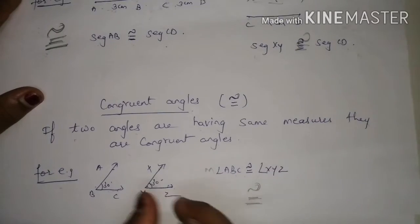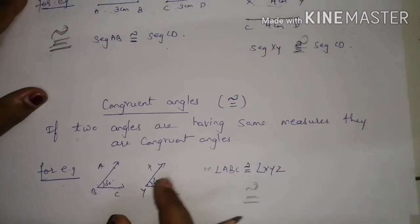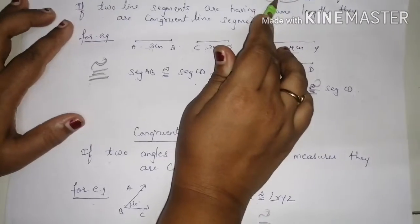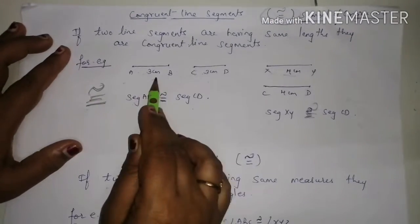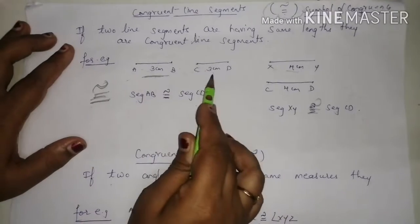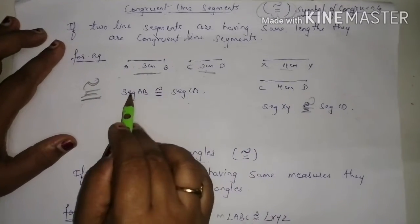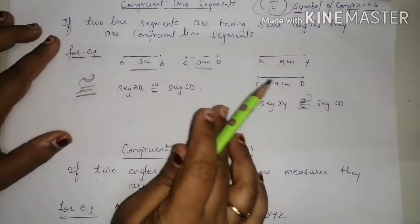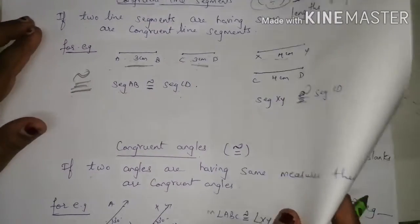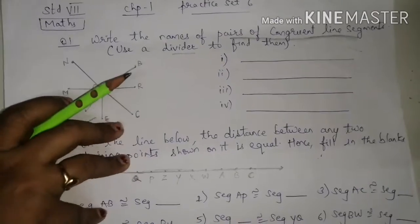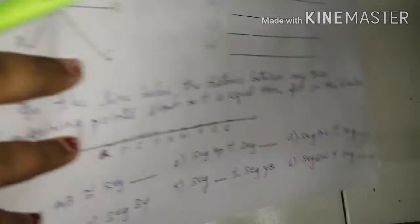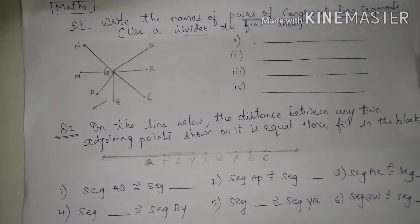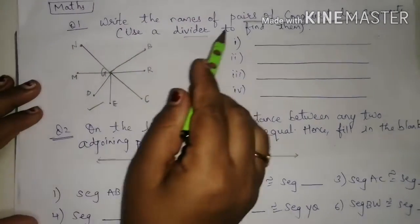Remember this congruence symbol — we use it when two line segments or two angles have the same measure. When two segments are congruent, meaning they have the same measurement, for example 3 cm and 3 cm, we write: segment AB is congruent to segment CD. Now let's start Practice Set 6.